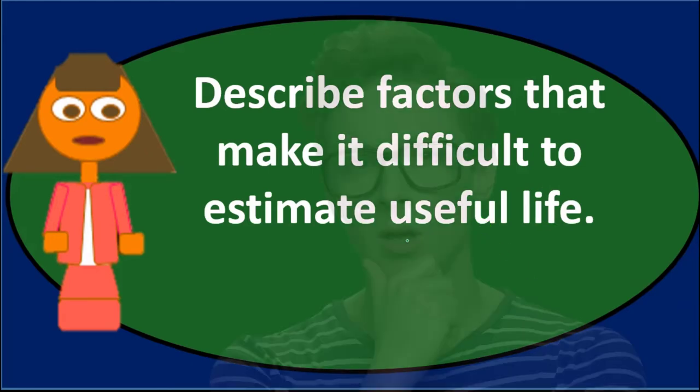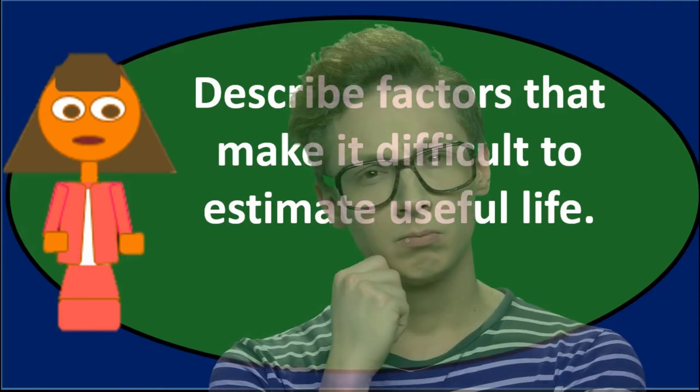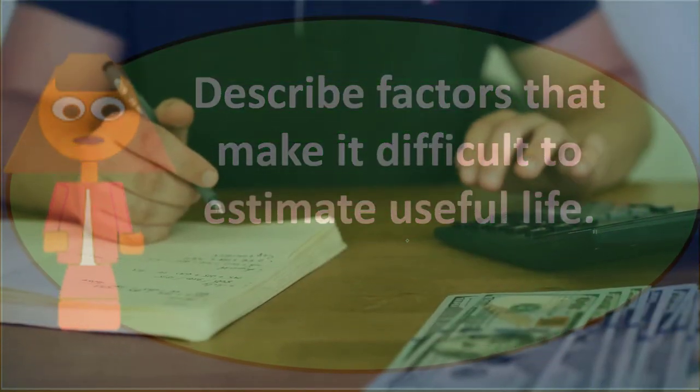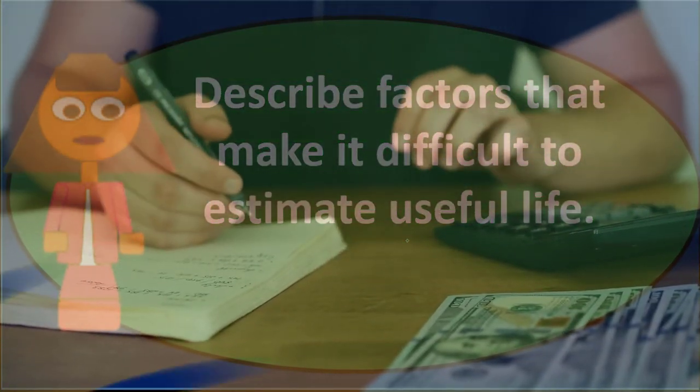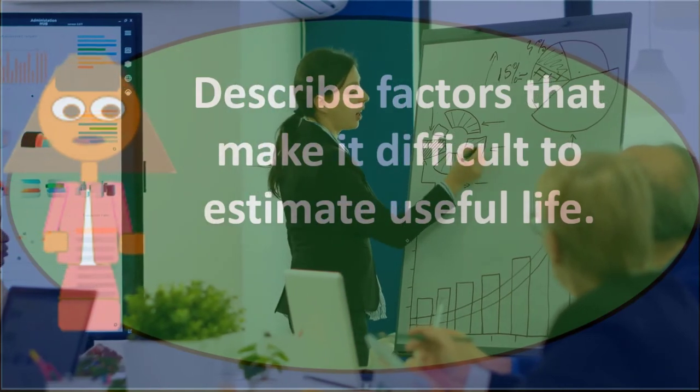When you think about depreciation, you may be asking yourself, how would someone come up with a useful life? Isn't that pretty arbitrary? Can't you have a pretty big difference in terms of what you're going to be allocating in terms of net income based on what you decide the useful life to be? And the answer is, yeah, you can change things a lot.